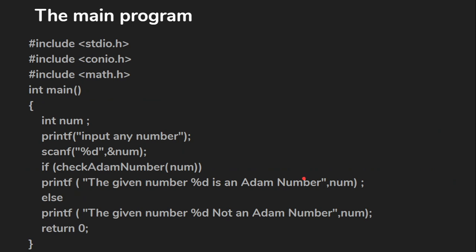Now let us see how the program logic works. Here we are learning a new concept — the function concept. Functions have a function name and enclosed brackets; within the brackets there may or may not be parameters. The functions are of two types: system-defined or library functions, and user-defined functions. Library functions include main, getch, scanf, printf — these are all built-in functions of the language.